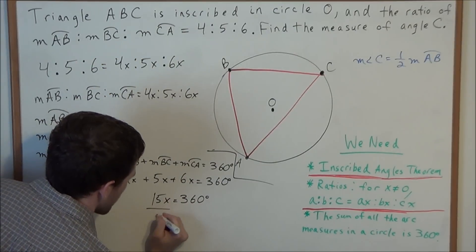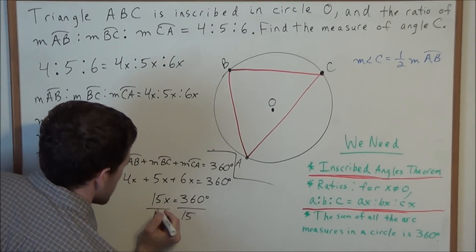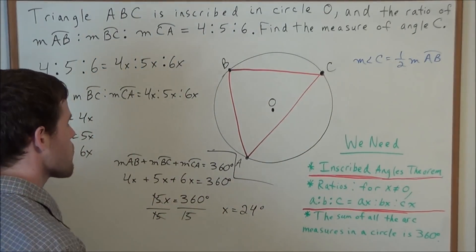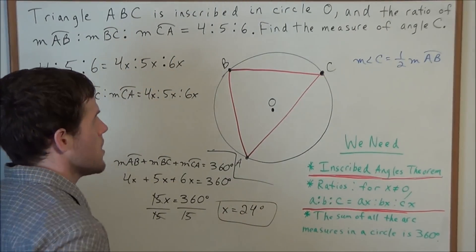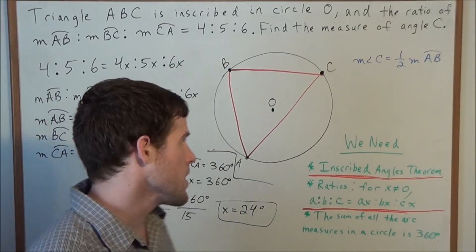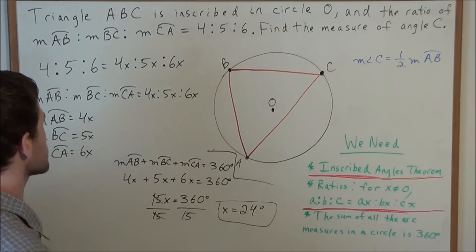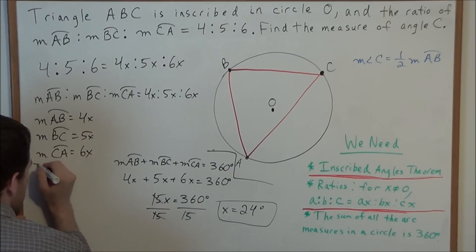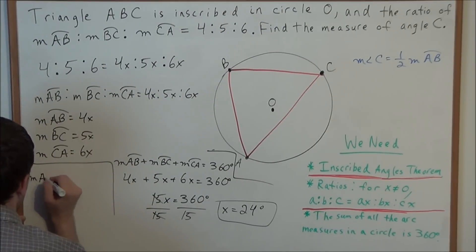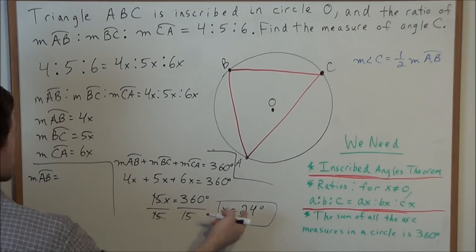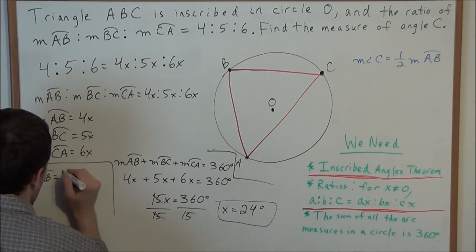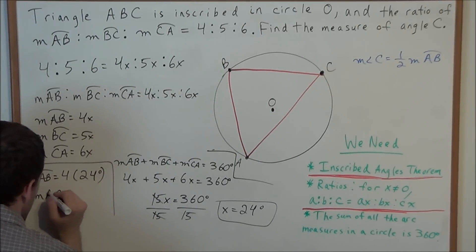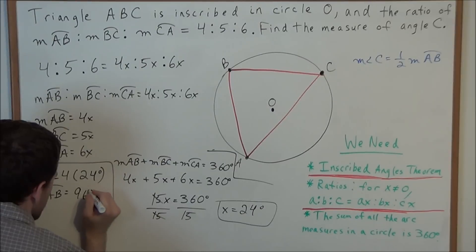To solve for x, we divide both sides by 15, which gives us x equals 24 degrees. The only arc we need for this problem is arc AB, which equals 4x. Replacing x with 24 degrees, we get 4 times 24 degrees, so the measure of arc AB equals 96 degrees.